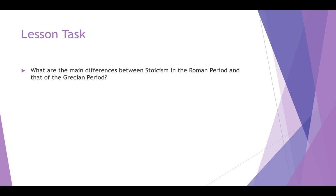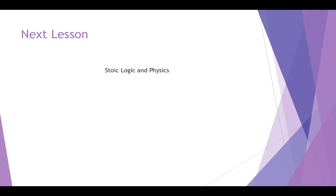As a lesson task, I'm going to link a couple of bits of reading. Think about what the main things were that we discussed in Greek Stoicism compared to what we've covered in this lesson, and how they contrast with each other. In the next lesson, we're going to look in detail at the specifics of Stoicism, focusing on the logic and the physics within Stoicism.